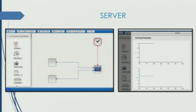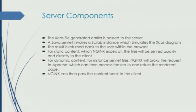This is the simulation. The user has created a diagram on the left side, and when they click on simulation, they get the simulated diagram. There are various server components — for example, a Java servlet is used at the backend to import the Xcos file, get the image, and send the image back. Nginx has been used above it.